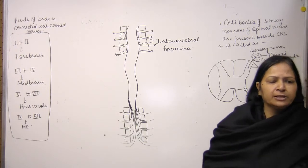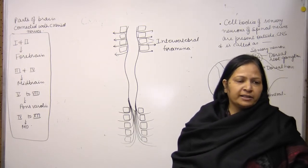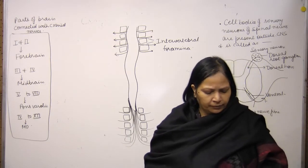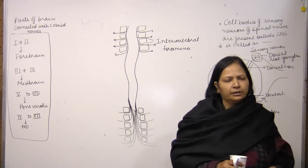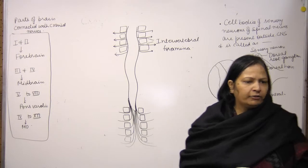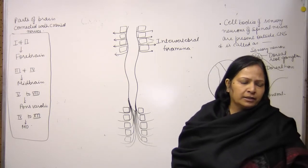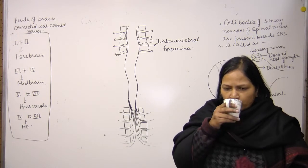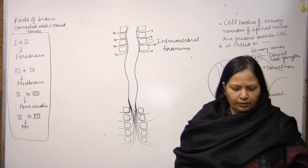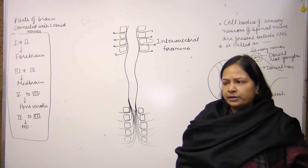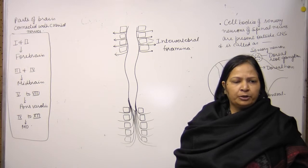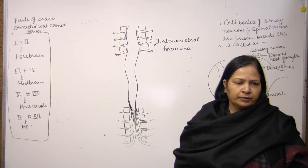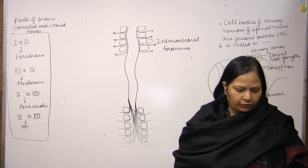Autonomic Nervous System or Visceral Nervous System consists of various nerves which control the movement of visceral organs of our body.